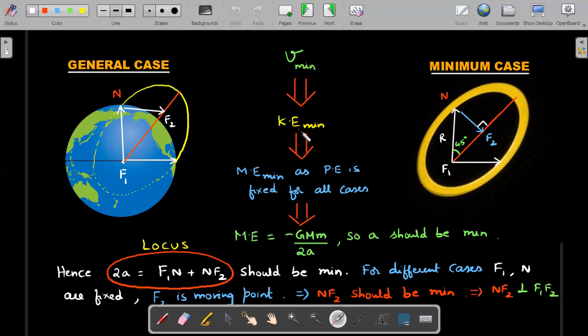So KE minimum, right? V minimum means KE minimum. You can add PE which is fixed to every throw and say that it is equivalent to having the mechanical energy is minimum. Okay, right? So actually want KE to be minimum. But because we have a formula for ME, I would like to minimize that because adding an equal PE in every throw is not going to affect my minimum condition.